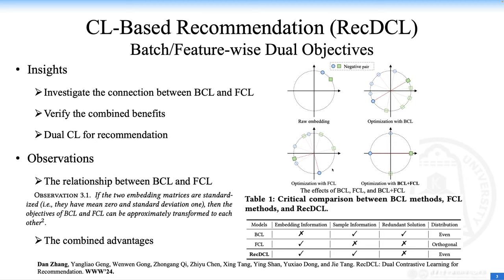In light of this, a meaningful question then arises: is there an effective optimization objective between BCL and FCL for self-supervised recommendations? So, we investigate a native connection of BCL and FCL, and we present a perspective to show a cooperative benefit by using them, from the perspective of theory and experiment.